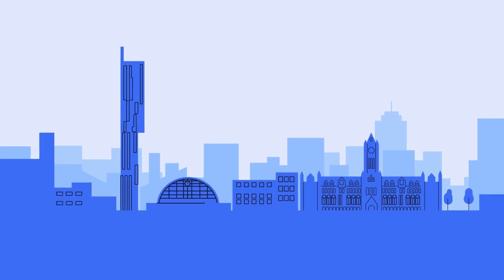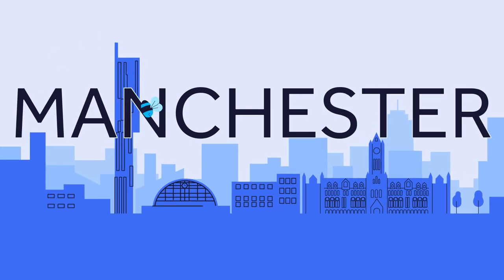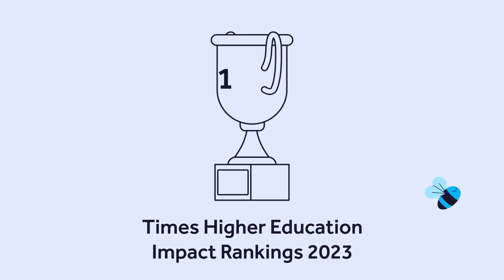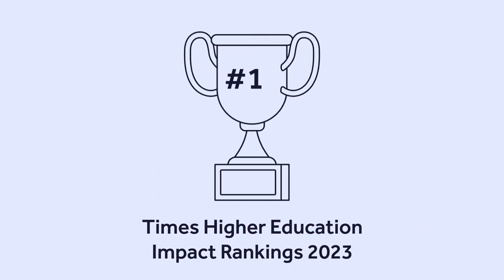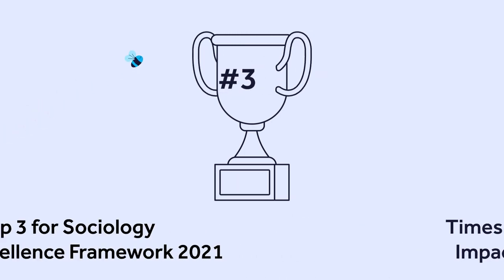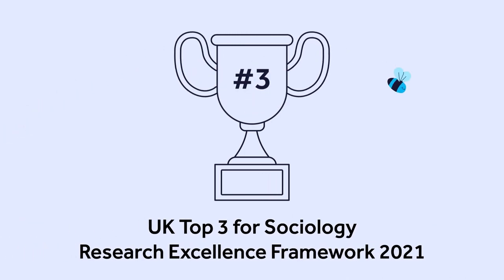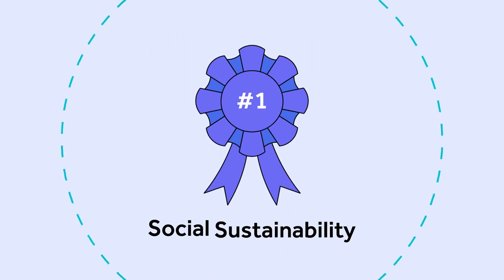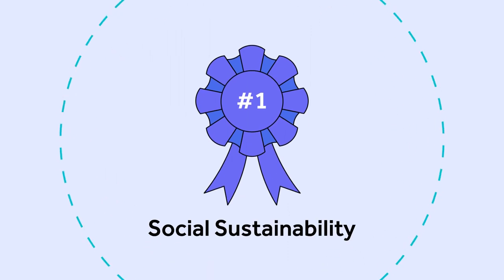And there's no better place to make that choice than at Manchester. A global leader in addressing the UN Sustainable Development Goals, ranked first in the UK and Europe and second worldwide in the THE Impact Rankings for Action on Sustainable Development. We are also proud to have one of the UK's top three sociology departments for research and social impact and to be the UK's only university with social sustainability as a core goal.